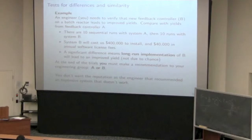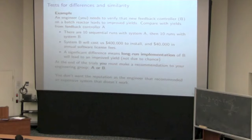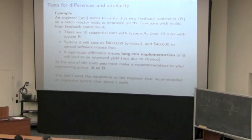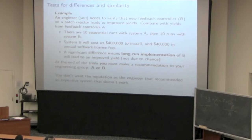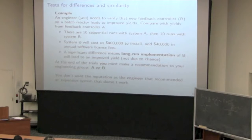To look at that detail, I'm going to use a single example for the rest of today's class. This is an actual example. You, as the engineer, need to verify that a new feedback controller G — that you're going to apply on your batch reactor — works better than the existing feedback controller A. One of the feedback companies like Aspen or GE comes to you and says: we've got this new feedback controller, put it on your batch reactor, and it's going to improve the yield that you get from your batch.